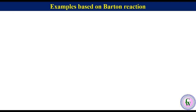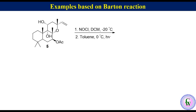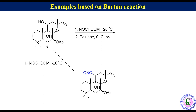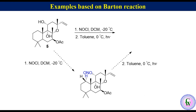Let's have another example in which we have to find the structure of the product when compound 5 is treated with nitrosyl chloride and the product formed is allowed to undergo photolysis in toluene at 0 degrees centigrade. Compound 5 reacts with nitrosyl chloride to produce the corresponding nitrite. In this nitrite compound, there are five delta carbons with hydrogen. But this hydrogen shown in blue, which is closest to the nitrite in space, will be abstracted. So after photolysis, the nitrite compound will be converted to this oxime.